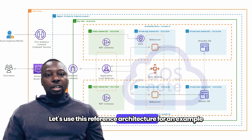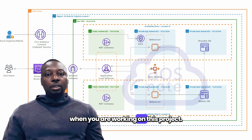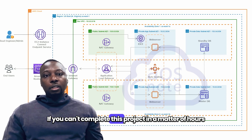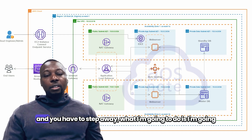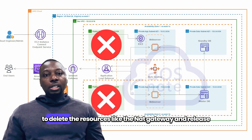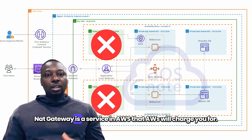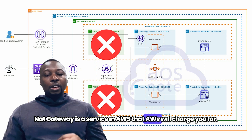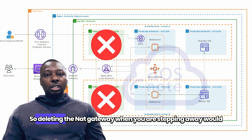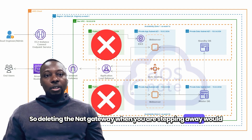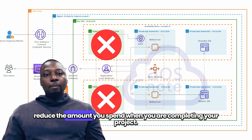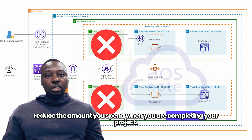Let's use this reference architecture as an example. If you can't complete the project in a matter of hours and have to step away, I'm going to delete resources like the NAT gateway and release the Elastic IP allocated to that NAT gateway. NAT gateway is a service that AWS will charge you for, so deleting it when stepping away will reduce your costs.